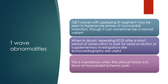When in doubt, repeating the ECG after a short period of observation to look for serial evolution, or supplementary investigations like echocardiography, are useful. This is mandatory when the clinical history is in favour of myocardial ischemic pain.